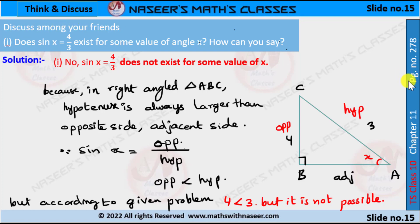Page number 278, Chapter 11 Trigonometry. Discuss among your friends: Does sin x equal 4/3 exist for some value of angle x? How can you say? No, sin x = 4/3 does not exist for some value of x.